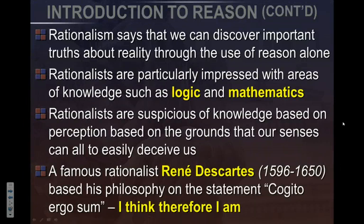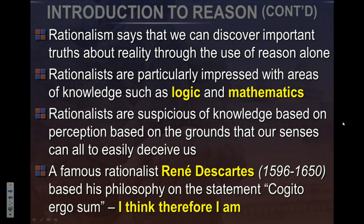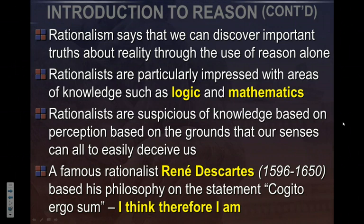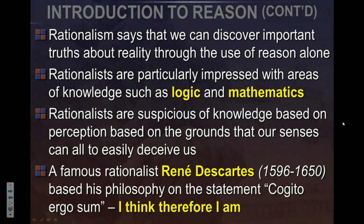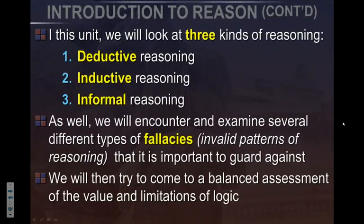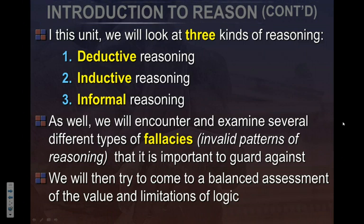Rationalism says we can discover important truths about reality using reason alone. This is a philosophical position known as rationalism that uses reason to derive conclusions about the world. Rationalists tie into things like logic, mathematics, and science. A famous rationalist philosopher, René Descartes, based his philosophical system on the statement 'I think, therefore I am' — though he said it in Latin. That Latin phrase is the basis of his philosophy: that reason and logic are how you can establish truths in the world. That's why this unit starts with reason — because philosophers claim it is the most reliable way of acquiring knowledge.